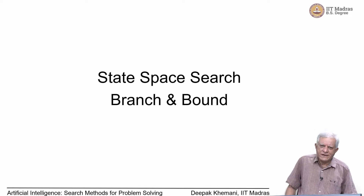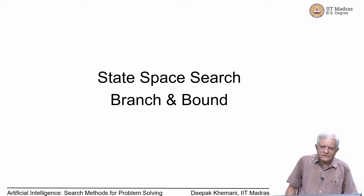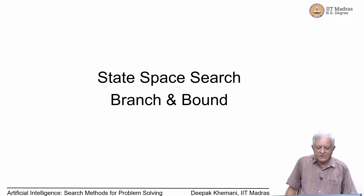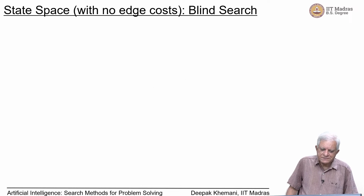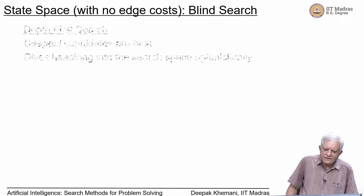We have been looking at algorithms to find optimal solutions when the state space has edge cost involved. We saw an example of solving the TSP using branch and bound. Let us come back to the problem we originally started with: you are at some start node and want to find the path to the goal node, but now those edges will have cost and our goal is to find the optimal solution. We have also studied blind search algorithms with no edge cost.